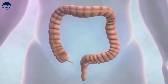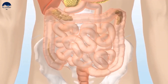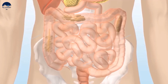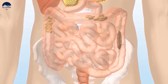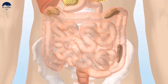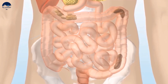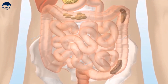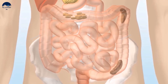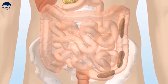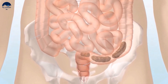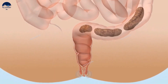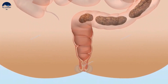The main function of the large intestine is to remove water from the undigested matter and form solid waste that can be excreted. The solid waste is called feces and is then stored in the rectum until it is excreted via the anus.